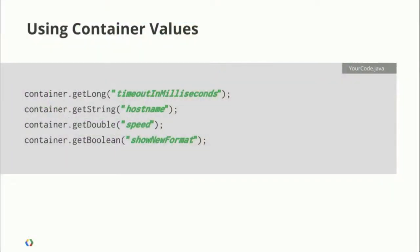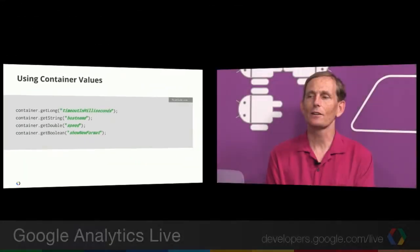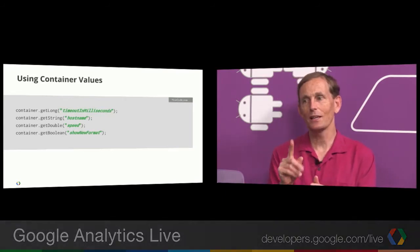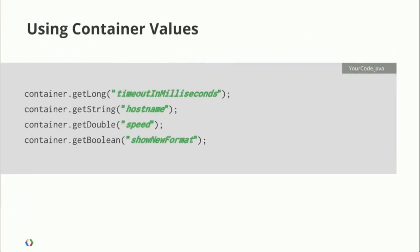Once you have a container, there are four basic calls: get long, get string, get double, or get boolean. You provide a string and it gives you back something of the same type. So if you have specified, for instance, your timeout for talking to a backend host in milliseconds, you call Container.getLong and that will return the latest and greatest value set up on the website. One thing to point out: when you're calling getLong or any of these get calls, there's no network communication happening. The network communication has already happened. We download the entire container and these are just local calls — not expensive at all.